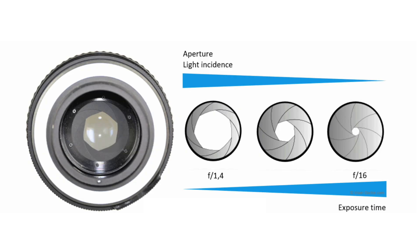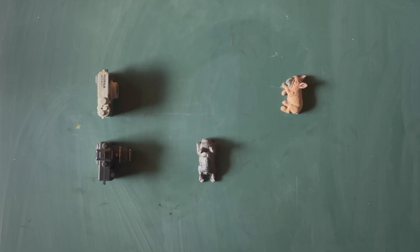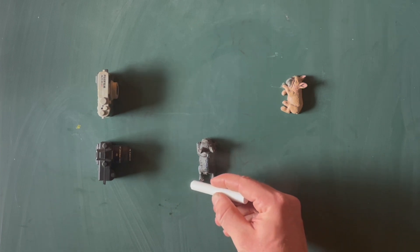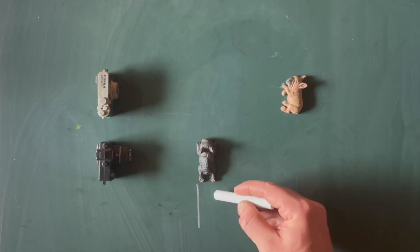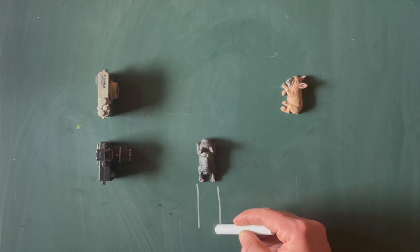The size of the aperture opening of a lens determines how much light can enter the lens in a given period of time. A larger aperture opening results in more light entering in a given time, which means that a shorter exposure time can be utilized. The size of the aperture opening when paired with the focal distance results in the effective depth of field.